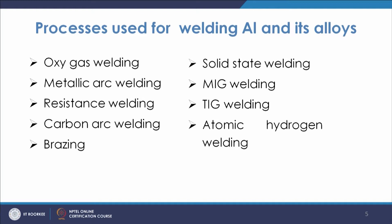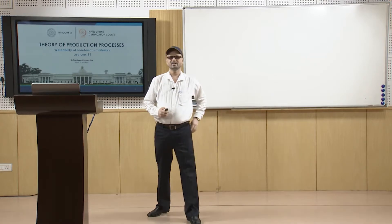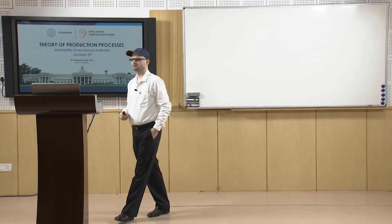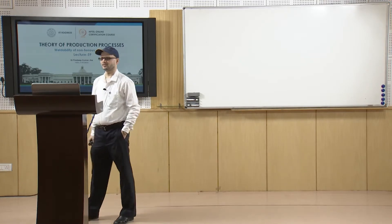The processes used for welding aluminum and its alloys include oxy-gas welding, metallic arc welding, resistance welding, carbon arc welding, brazing, solid-state welding, MIG welding, TIG welding, and atomic hydrogen welding.